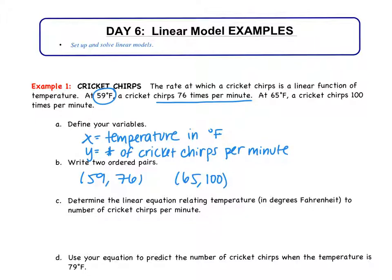So C, determine the linear equation relating temperature to number of cricket chirps per minute. Before we can write an equation of a line, what do we need to do? Find the slope. So that's the first thing we're going to do. So we have Y minus Y. So I'm going to do 100 minus 76 over X minus X, which is 65 subtract 59. 100 minus 76 is 24. 65 subtract 59 is 6. So we get a slope of 4.